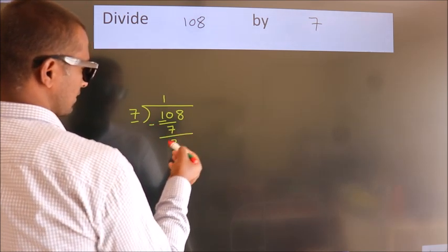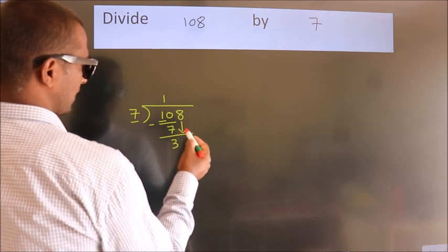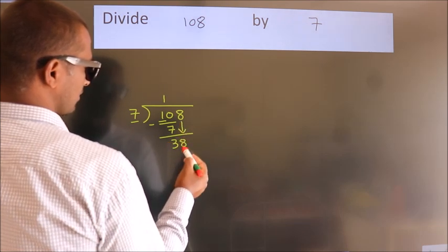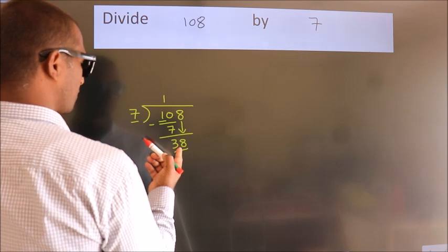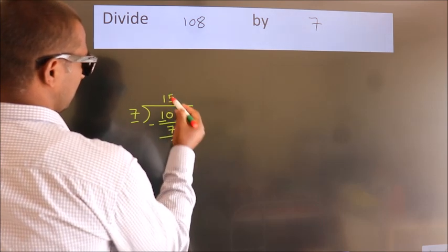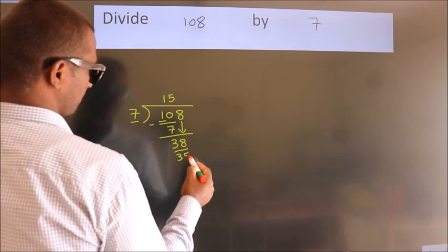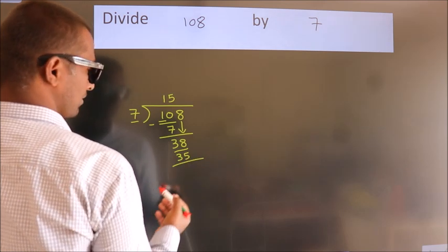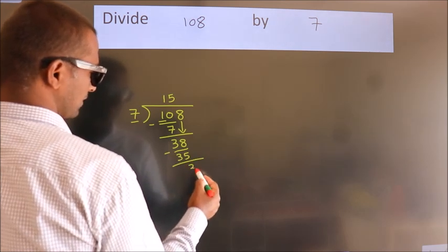After this, bring down the beside number. So 8 down, giving us 38. A number close to 38 in the 7 table is 7 fives, which is 35. Now we subtract. We get 3.